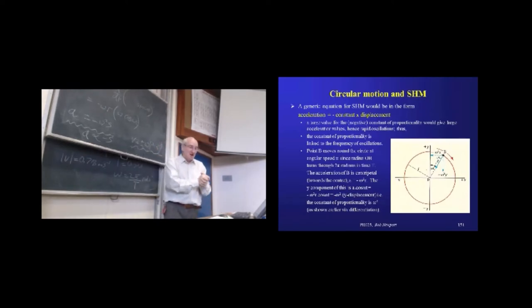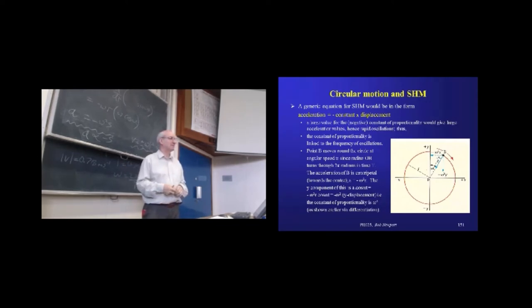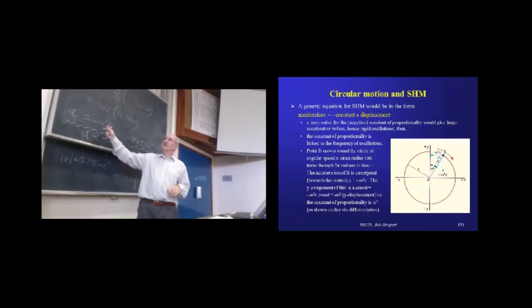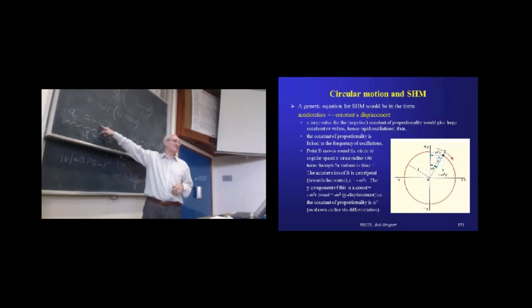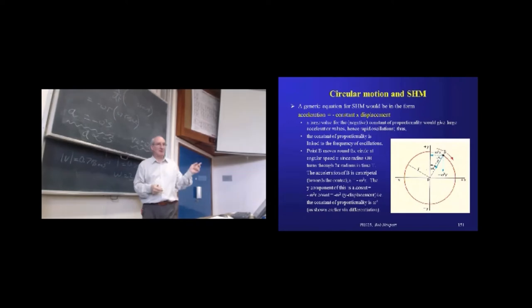So here it is — this is our generic equation for simple harmonic motion. The acceleration is minus, because it's back towards the equilibrium, but it's always going to have this form: minus some constant multiplied by the displacement. Now in the case we've looked at here, our constant was omega squared. So if we get a large value of the constant, we're having rapid acceleration — it just means our angular frequency is bigger, so it's going around faster, going through its oscillations faster, which means the acceleration is going to be bigger.